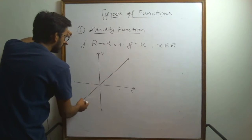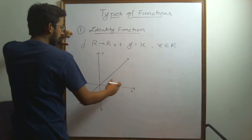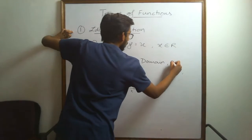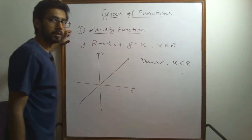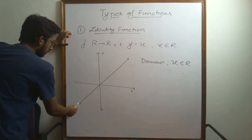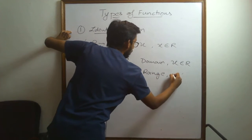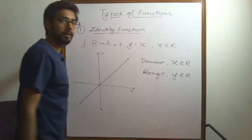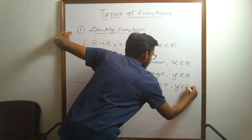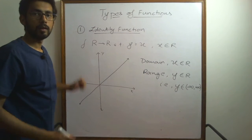This is known as an identity function because the dependent variable is always equal to the independent variable. The straight line extends both sides. The domain of this function is defined for all real values of x, so the domain is the set of real numbers. Looking at the graph, the value of y ranges from minus infinity to plus infinity, so the range is also the set of real numbers, written as y belonging to the open interval from minus infinity to plus infinity.